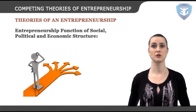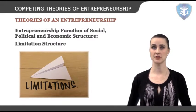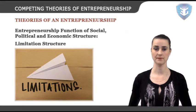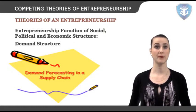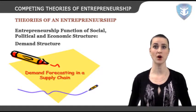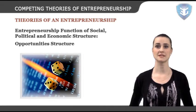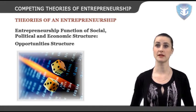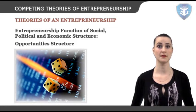Entrepreneurship: Function of Social, Political and Economic Structure. Limitation Structure — the society limits specific activities to members of particular subcultures, and this limitation structure affects all the members of a society. Demand Structure — the limitation structure is basically social and cultural, but demand structure is mainly economic; it is not static and changes with economic progress and government policies. Opportunity Structure — this structure is necessary to increase the probability of entrepreneurial activity, and constitutes the availability of capital, management and technological skills, information concerning production methods, labor and markets.